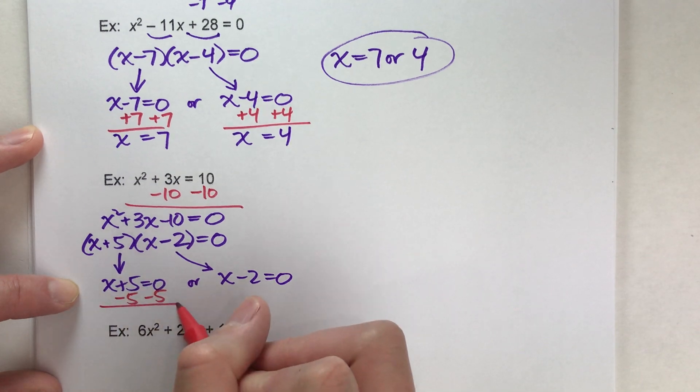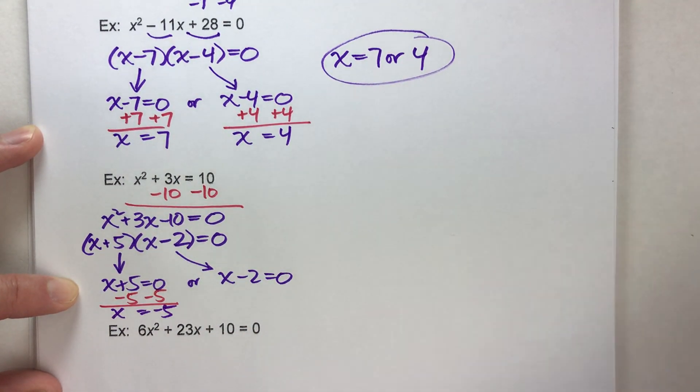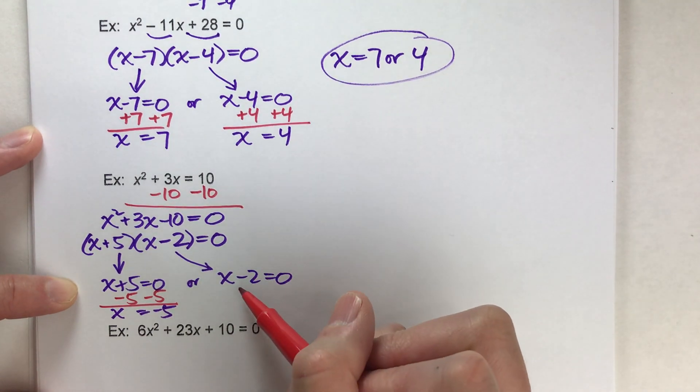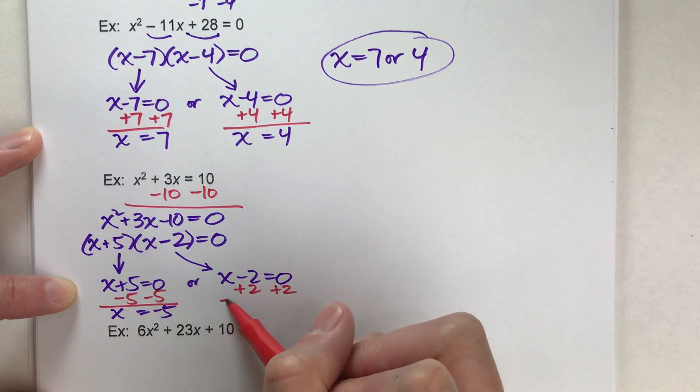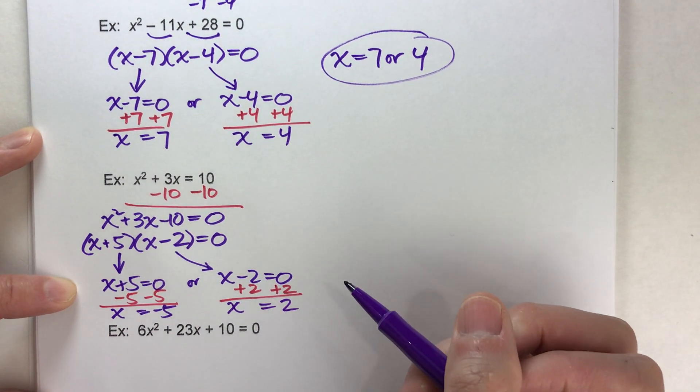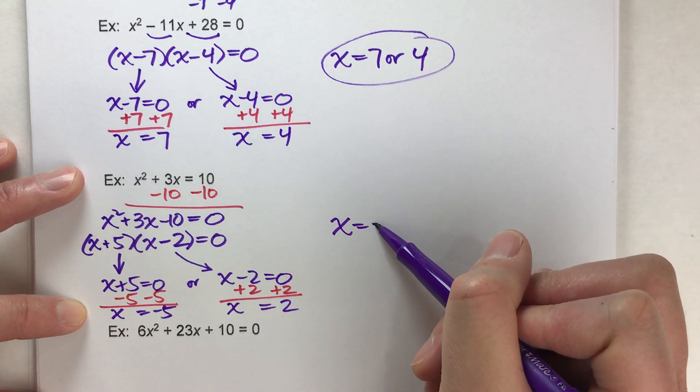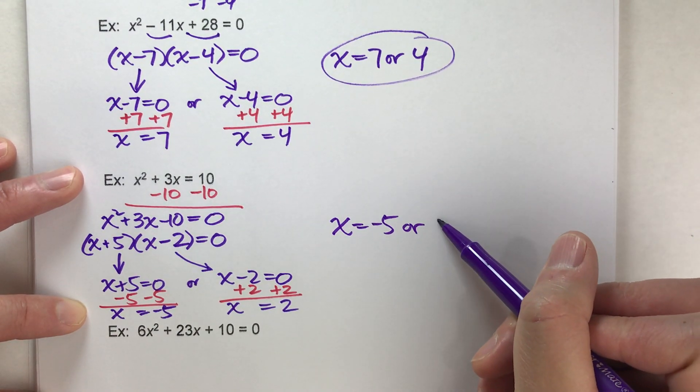Let's solve them and figure out what x must be. Subtract 5 on both sides. In this case here, x has to be negative 5. Over here, add 2 to both sides. In this case here, x has to be 2. So we found our possible solutions for x. x is either negative 5 or 2.